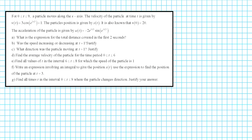For 0 ≤ t ≤ 9, the particle moves along the x-axis. The velocity of the particle at time t is given by v(t) = 3cos(e^(2t/3)) + 1. The particle's position is given by s(t), and it is also known that s(0) = 20. The acceleration of the particle is given by a(t) = -2e^(2t/3) · sin(e^(2t/3)).